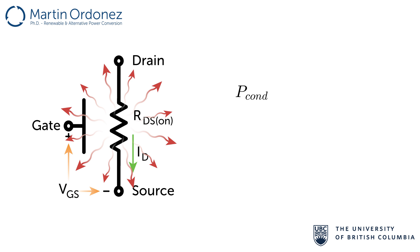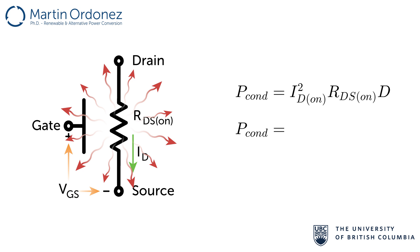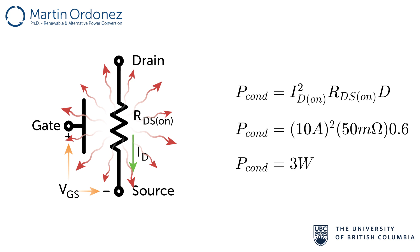Conduction losses can be determined as ID_on squared times RDS_on times the duty cycle. So we have 10A squared times 50 mΩ times 0.6, which gives 3 watts of conduction losses.